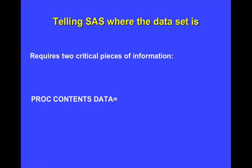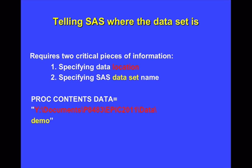It should be fairly intuitive that when you're working with procedures, SAS needs two critical pieces of information. First, you need to specify the data location — simply the file path to the folder on your computer, flash drive, or network drive where the dataset is located. And then SAS also needs to know the name of the actual dataset. In our example, we've been using the SAS dataset named demo. We've also seen that when referencing the dataset, you don't need to include the file extension .sas7bdat — you can just use the actual name of the SAS dataset.